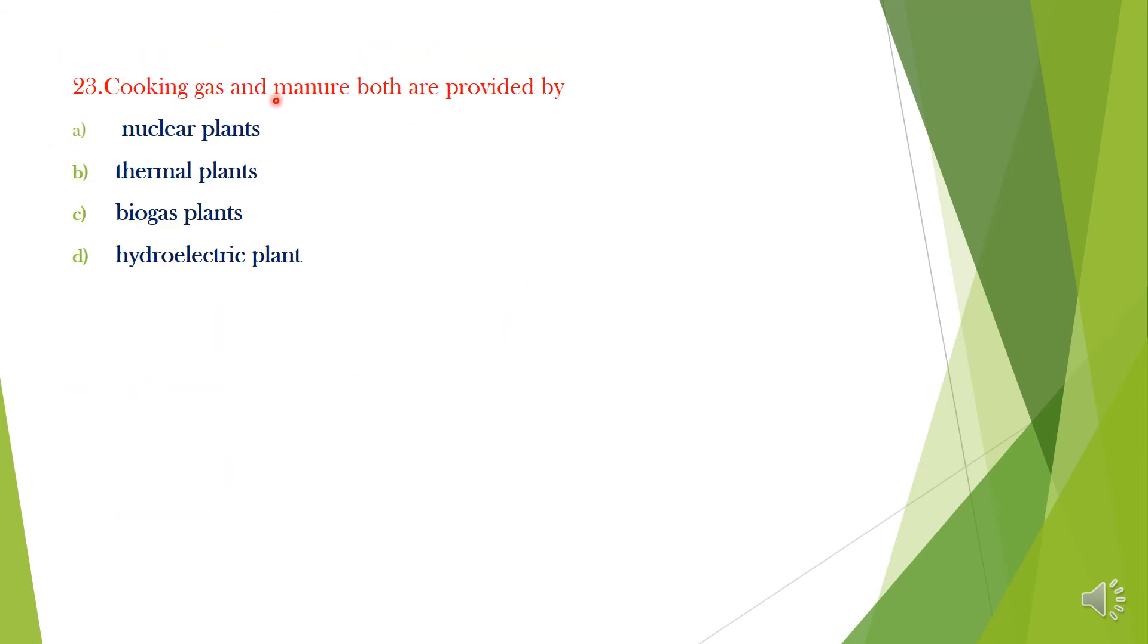Question 23. Cooking gas and manure, both are provided by: A. Nuclear plants, B. Thermal plants, C. Biogas plants, D. Hydroelectric plant. Answer is option C, Biogas plant.